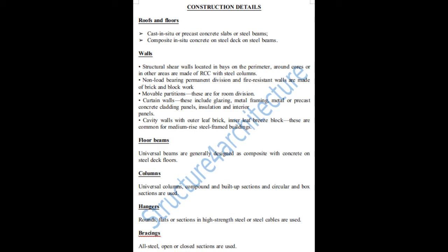Curtain walls include glazing, metal framing, metal or precast concrete cladding panels, insulation, and interior panels. Cavity walls with an outer leaf brick and inner leaf breeze block are common for medium-rise steel-framed buildings. Floor beams: universal beams are generally designed as composite with concrete on steel deck floors. Columns: universal columns, compound and built-up sections, and circular and box sections can be used. For hangers, rounds, flats, or sections in high-strength steel or steel cables are used. For bracing, all steel open or closed sections are used.